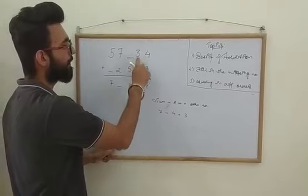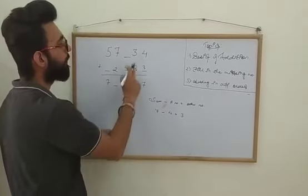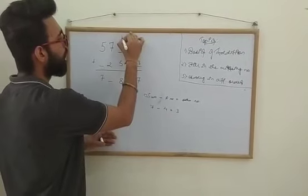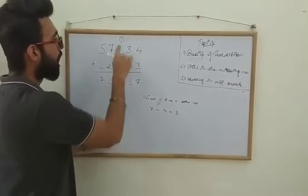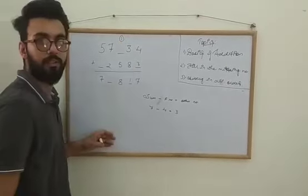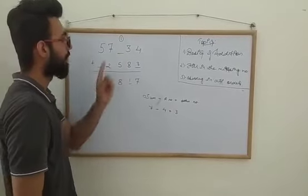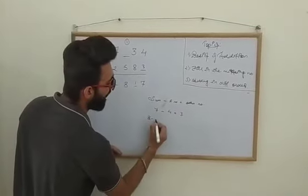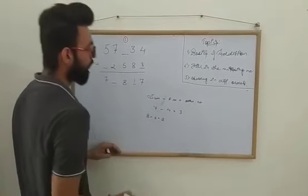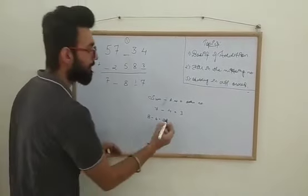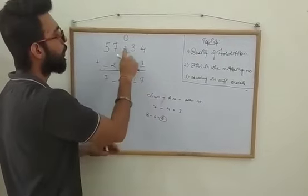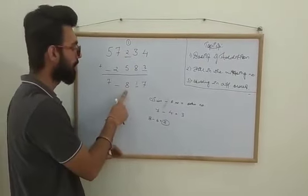Now it is given 8 and 3. We know how to add. 8 plus 3 is 11, so write 1, carry 1. Now 5 and 1 is 6, and here the answer is 8. So again we will do subtraction, 8 minus 6 equals 2. So the number which is missing is 2, we will write 2 here. We can recheck it: 2 plus 1 is 3, 3 and 5 is 8.